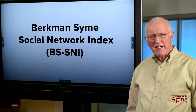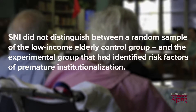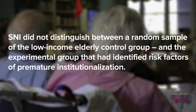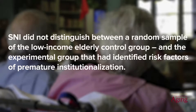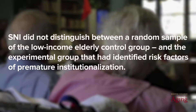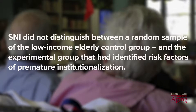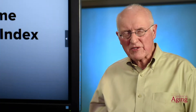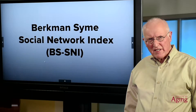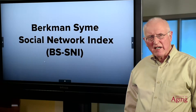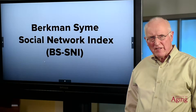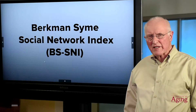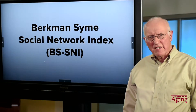Unfortunately, the SNI did not perform well in our study. It was not capable of distinguishing between a random sample of low-income elderly that constituted our control group and our experimental group that had been purposely recruited because they had identified risk factors of premature institutionalization, including the risk factor of social isolation. This finding suggested that something was wrong with the SNI as it was being administered among our older adult study population. Given that I was at UC Berkeley, I gained access to the research team that had constructed the survey instrument used in the Berkman Syme study, and was able to deconstruct the SNI elements and parse its scoring algorithm.